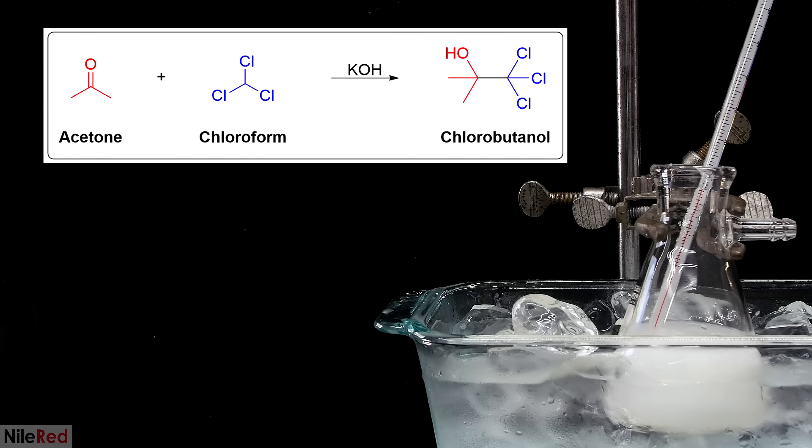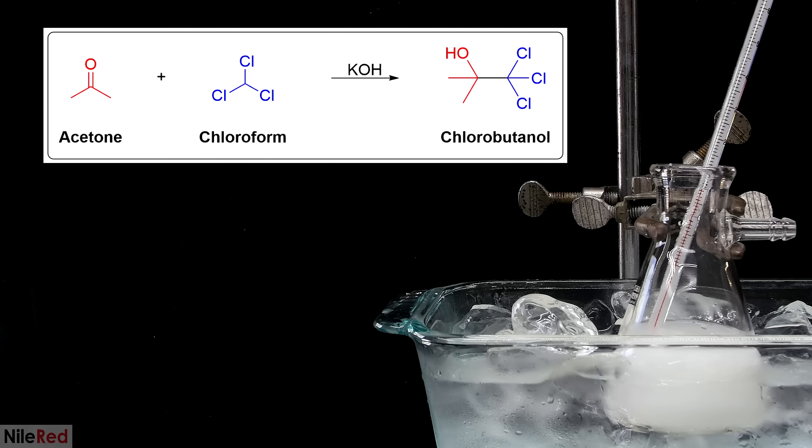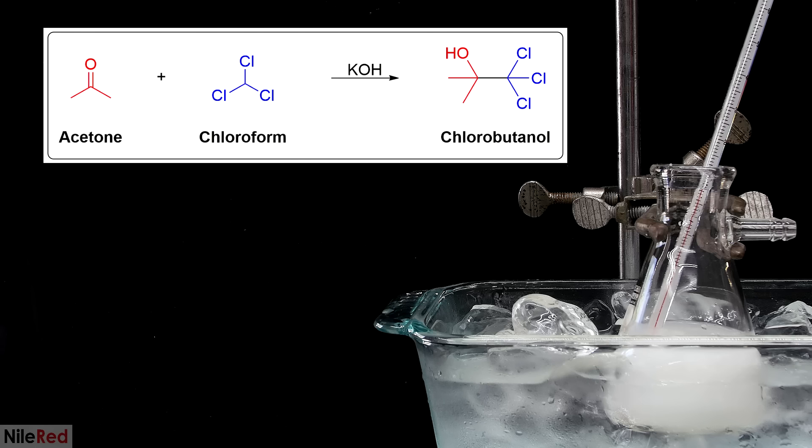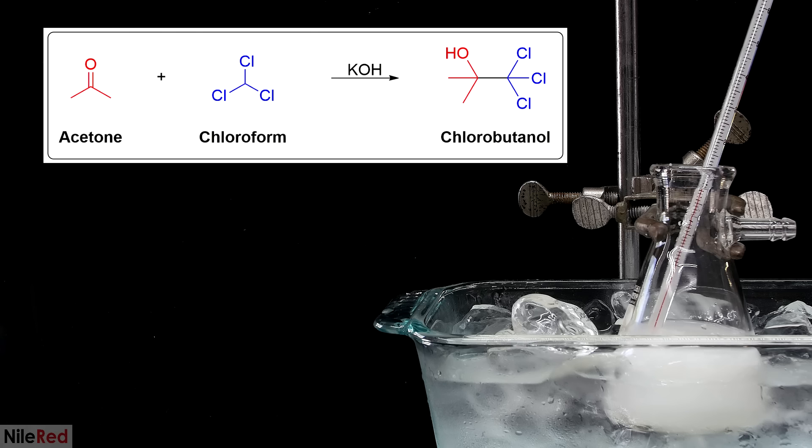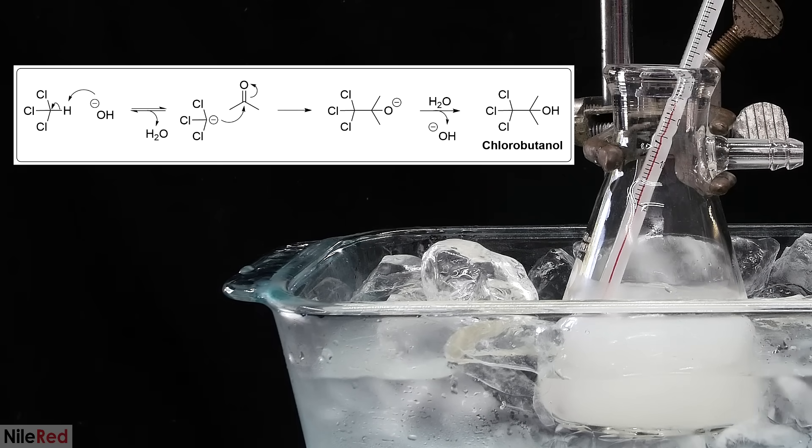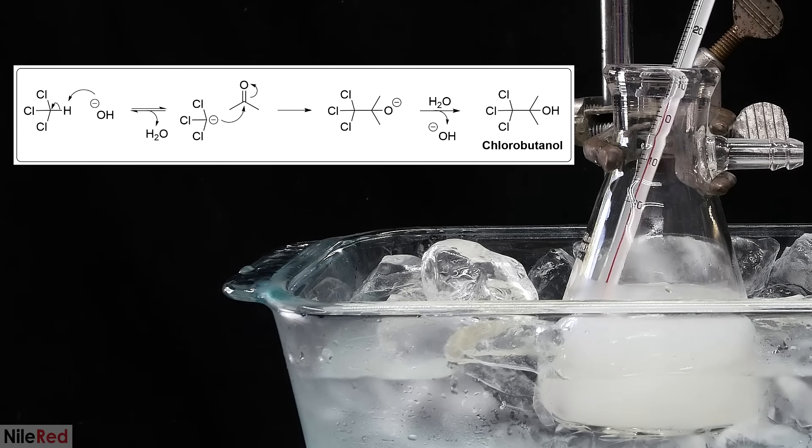What's going on here is a base-catalyzed reaction between acetone and chloroform. The acetone is used in a large excess, and it dissolves the chlorobutanol as it forms. The solid white stuff that we see floating around is just finely powdered potassium hydroxide. I couldn't find a proper resource for the mechanism, but this is probably what's going on.